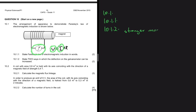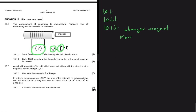You can use a stronger magnet, or you can move the magnet quicker inside the coil. Another way is to increase the number of turns on the coil.